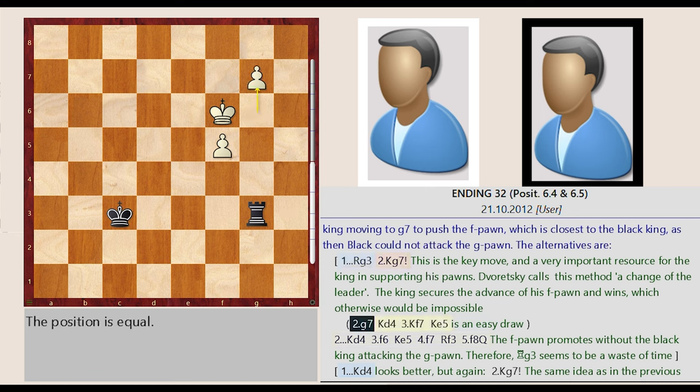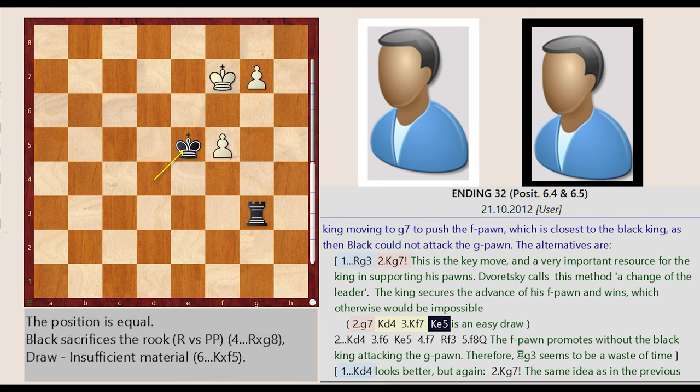G6 g7, King c3 d4, King f6 f7, King d4 e5 is an easy draw.